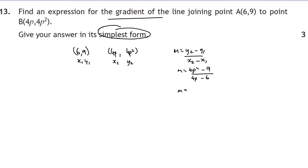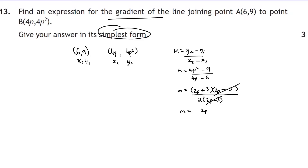The numerator 4p² − 9 is a difference of two squares: (2p + 3)(2p − 3). The denominator 4p − 6 has a common factor of 2: 2(2p − 3). The (2p − 3) terms cancel, leaving (2p + 3)/2 as the simplified expression for the gradient.